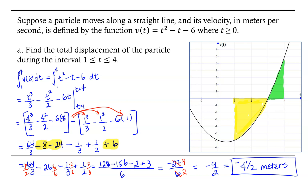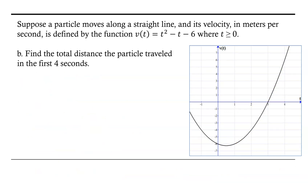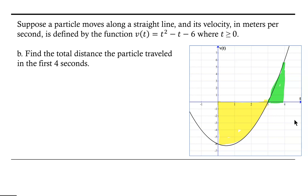So the displacement of the particle is negative 4 and one-half meters — to the left. Looking at the graph over the first 4 seconds: starting from t = 0, the particle traveled to the left a fair amount since that area is below the x-axis. Then from t = 3 to t = 4, the particle travels some distance to the right.